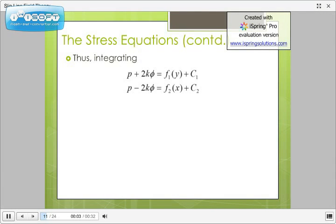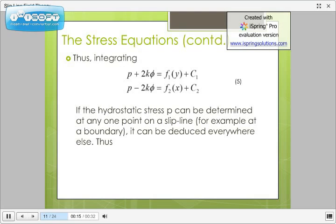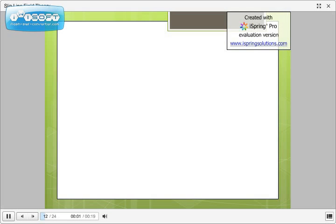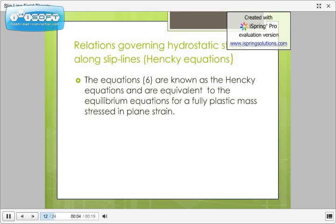Thus, integrating the previous equation, that is equation 4, we get P plus 2k phi equals f1, which is a function of y plus c1, and P minus 2k phi equals f2, which is a function of x plus c2. If the hydrostatic stress P can be determined at any point on a slip line, for example at a boundary, it can be deduced everywhere else. Thus, P plus 2k phi equals constant along an alpha line, P minus 2k phi equals constant along a beta line. The equation 6 are known as Hencky equations and are equivalent to the equilibrium equations for a fully plastic mass stress in plane strain.